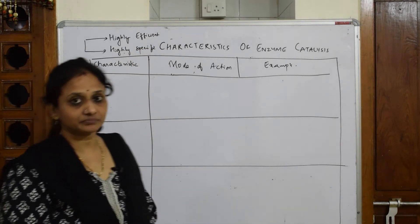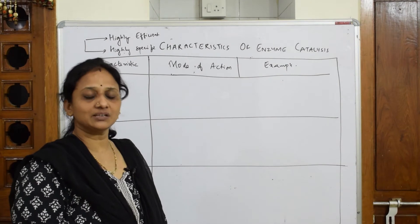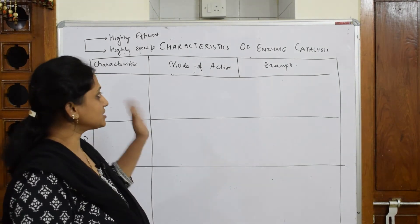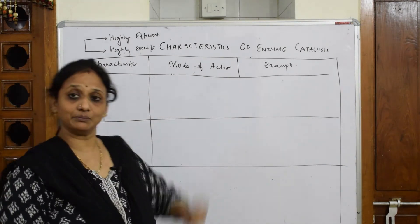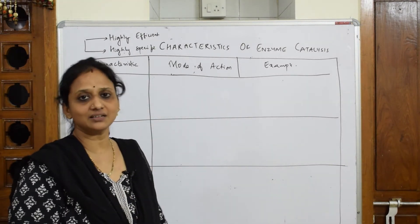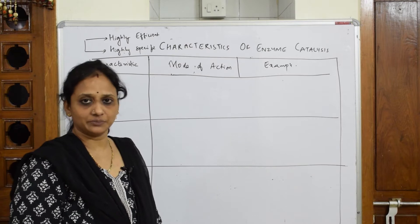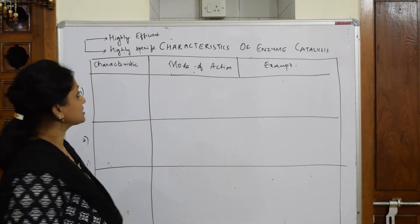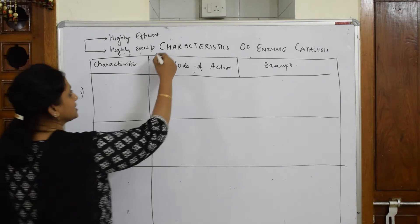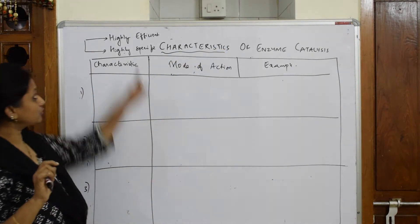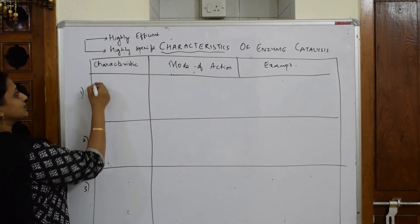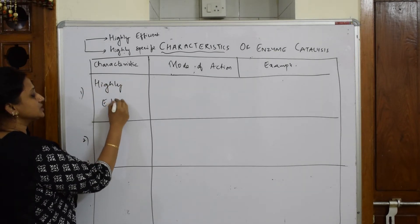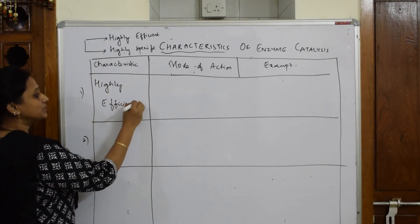Let us start with an explanation of how to write the answer in the exam. As soon as the question is given, try to make a tabular column because you have all the data to fill in. The first and most important characteristic to write is that enzymes are highly efficient in nature.